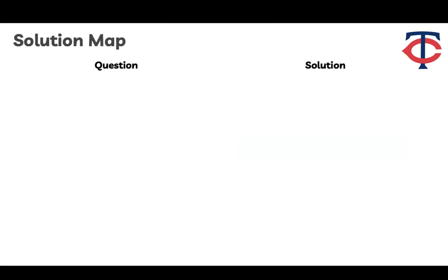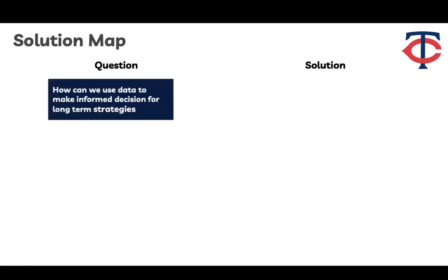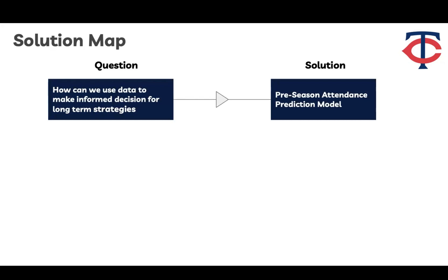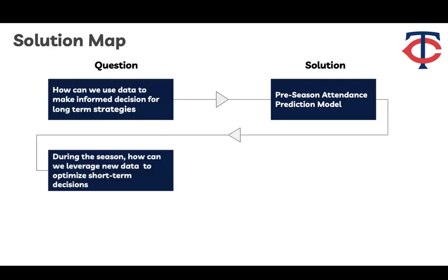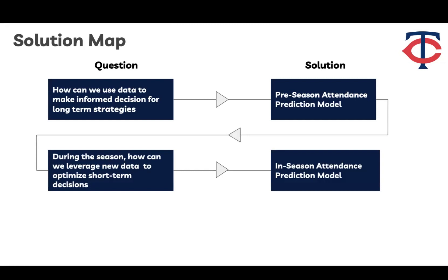To answer that, first we recognize there are operations such as staff hiring, schedule planning, and season ticket price determination that require the team to plan before the season. We want to know how we can use data to make informed decisions for long-term planning, so we propose a pre-season attendance prediction model. As we move into the season, we obtain more data before each game, such as who is playing, the weather forecast, and team performance so far. We also propose a second model that accounts for all factors known before each game to help with short-term decisions like concession and merchandise preparation.